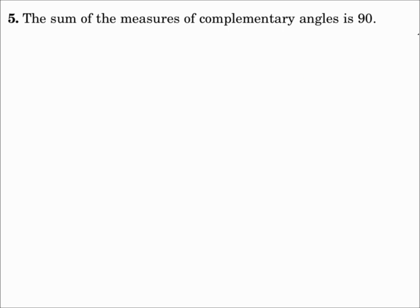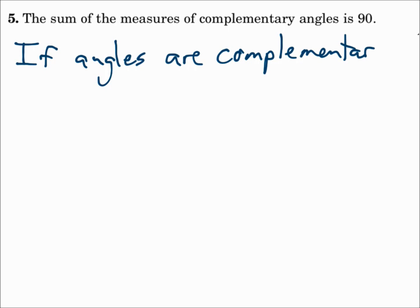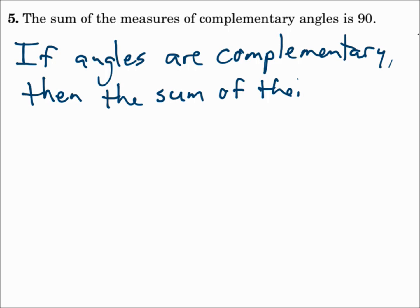Number 5: The sum of the measures of complementary angles is 90. Are angles complementary because the sum of their measures is 90, or is the sum of their measures 90 because they're complementary? For this one it could go either way, so choose the best version that is grammatically correct. If angles are complementary, then the sum of their measures is 90.